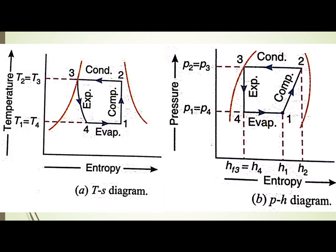The evaporation and condensation processes are isothermal because they are phase change processes. In process 2 to 3, the wet vapor is transformed to saturated liquid. In process 4 to 1, the wet vapor is transformed to wet vapor, but the dryness fraction is different — the dryness fraction at point 4 is less than at point 1.